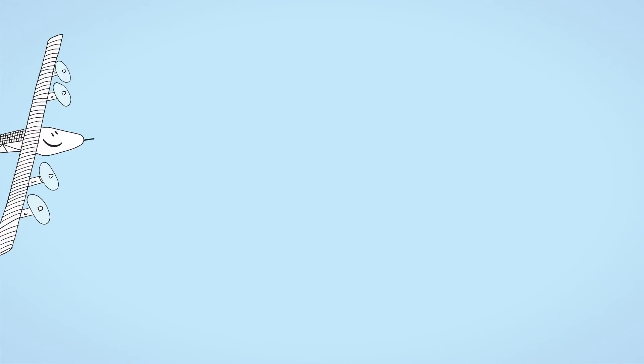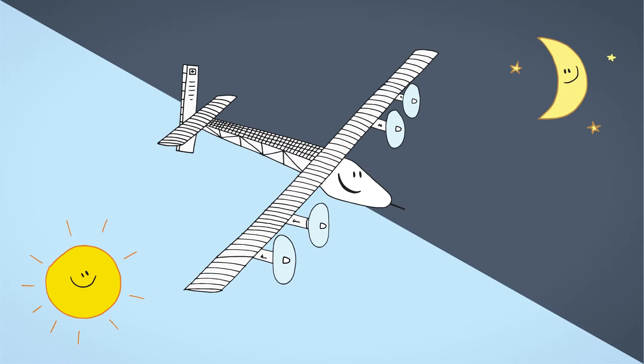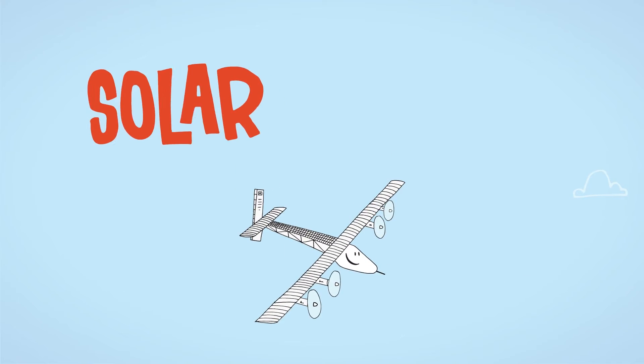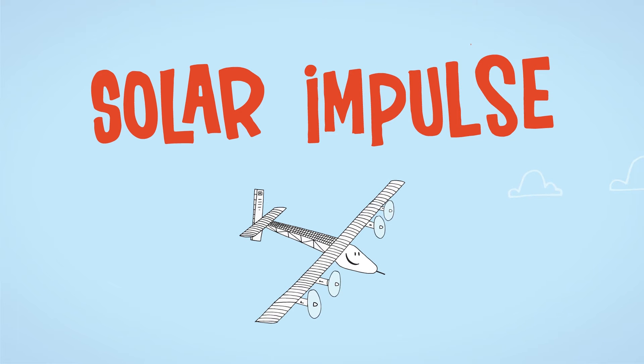They have an ambassador, a silent airplane flying day and night without a single drop of fuel. Solar Impulse was built to convey such a message.